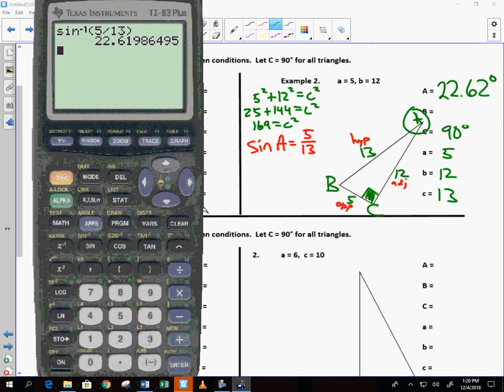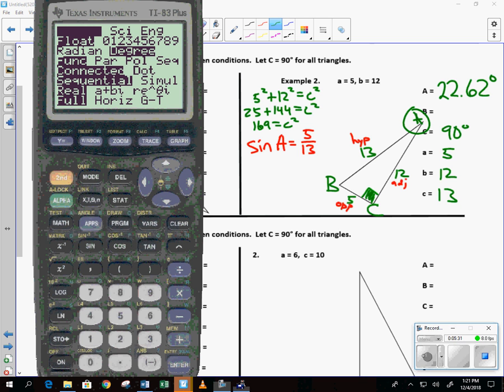Everybody on your calculator, make sure you do sine inverse of 5 over 13. And make sure you come up with 22.62. If you do not, let me know so we can figure out what the heck is going wrong. Issue? Okay. So we got 22.62.